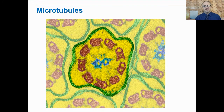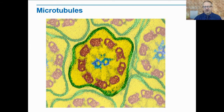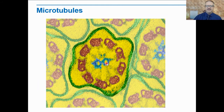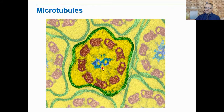Microtubules also help build projections from the cell's surface known as cilia and flagella. When we come across organisms with cilia or flagella, they're actually made out of microtubules. What we're looking at here is a cross-section of a flagellum showing the 9-plus-2 arrangement of microtubules — nine outer filaments and two in the center. They're the same structure, just colored differently to help us see them.